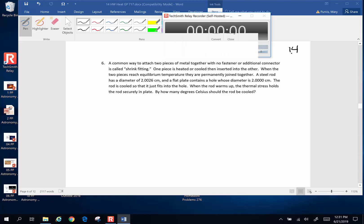Hi folks, here is another question about linear expansion. A common way to attach two pieces of metal together with no fastener or additional connector is called shrink fitting. One piece is heated or cooled and inserted into the other.